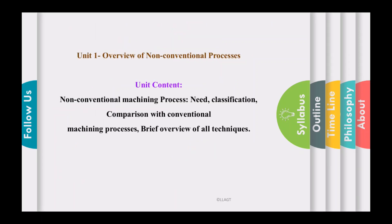Let us discuss the syllabus of each unit. Unit number one covers an overview of non-conventional machining processes. The contents include: the need for non-conventional machining processes, classification of non-conventional machining processes, comparison of non-conventional machining with conventional machining processes, and an overview of all techniques belonging to non-conventional machining processes.